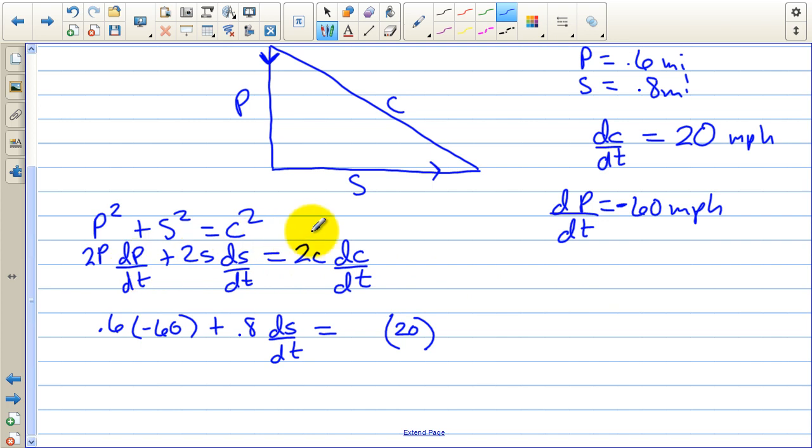We're going to have to do some Pythagorean theorem to find out what C is when P is 0.6, S is 0.8. We want to know what C is. So we have 0.6 squared plus 0.8 squared equals C squared. And we'll have to square root both sides to find the value. That equals 0.36 plus 0.64, the square root of that. And that equals 1. So C ends up being 1.